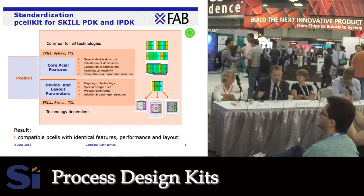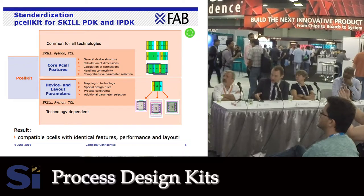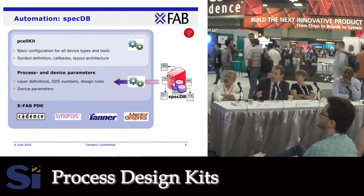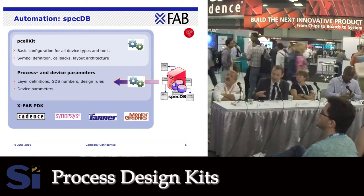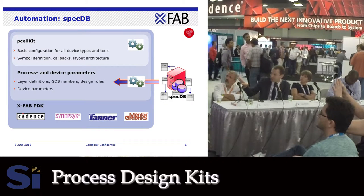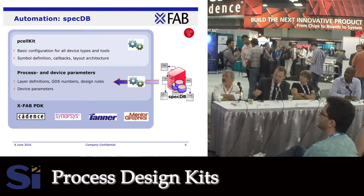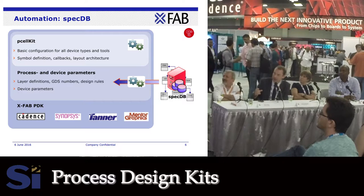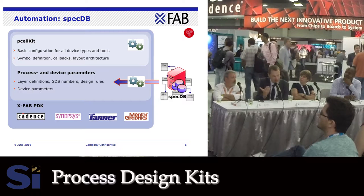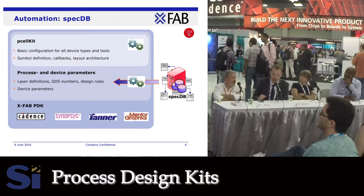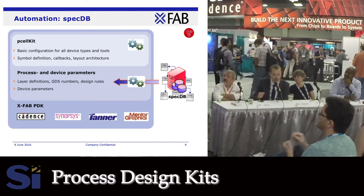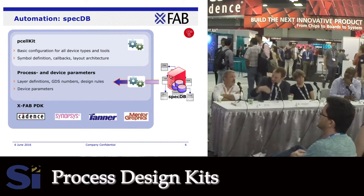For automation, we use what we call SpecDB — an executable specification or first step in that direction. Previously, developers manually read PDF files and typed in parameters, which was error-prone. Now we have a database system used to both generate PDF files and import parameters — a big step toward automation. For best practices from software development, deep regression is quite important. We have an in-house system to automatically run DRC and LVS on a very large pattern set, collecting and comparing results. We also XOR-match layouts between different EDA vendors, since customers sometimes migrate from one to another.